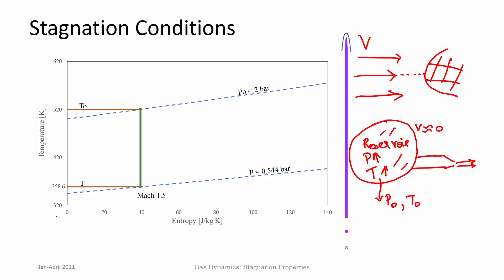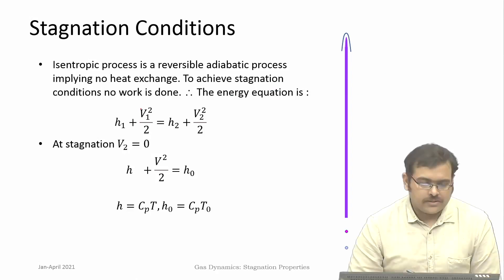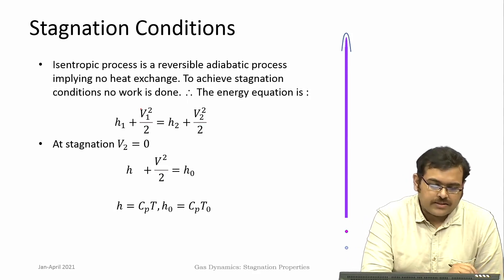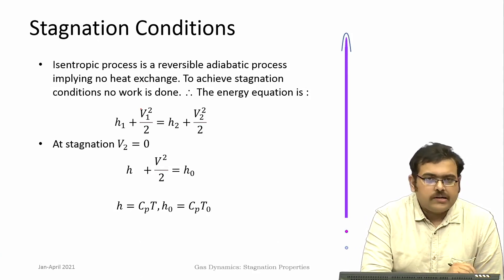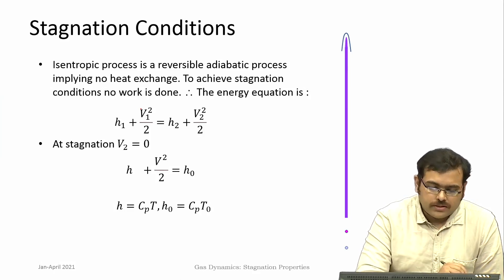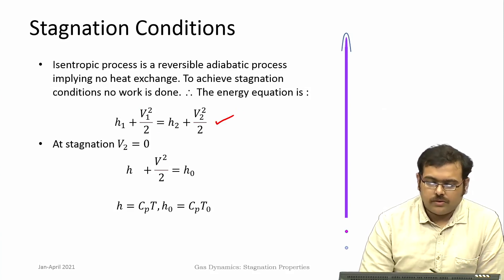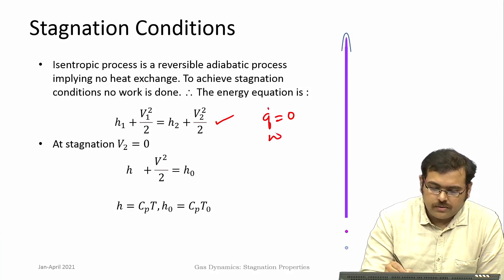From energy considerations we can show that both pressure and temperature increase and they reach the stagnation values. Now let us look at the analysis of stagnation conditions — how do we get them and what are the relations between the flow conditions and the eventual stagnation pressures and temperatures. By definition the stagnation process is an isentropic process and no work is done. We take the energy equation: h1 + V1²/2 = h2 + V2²/2, where there is no heat added, so q-dot is 0 and work done is also 0.